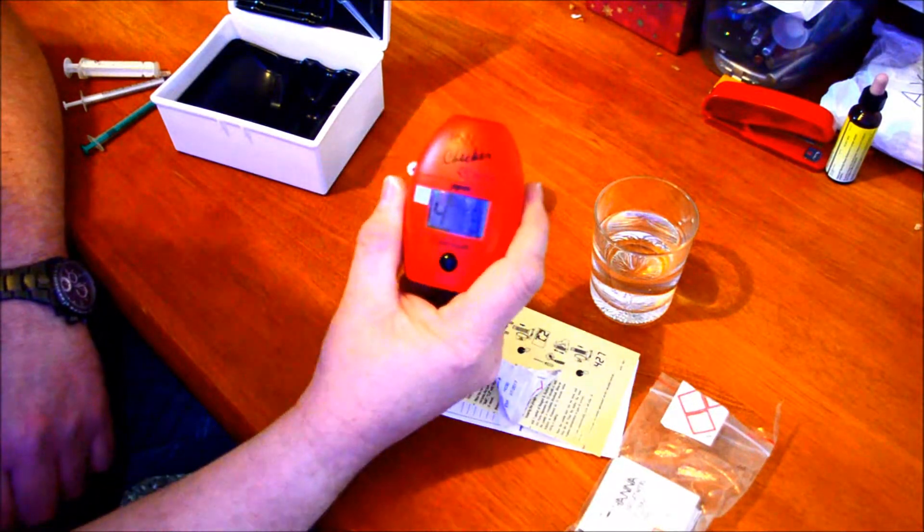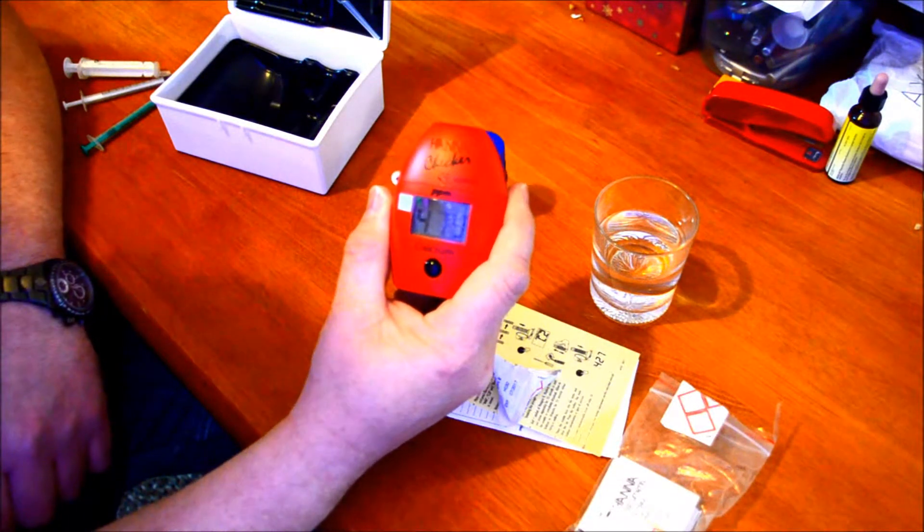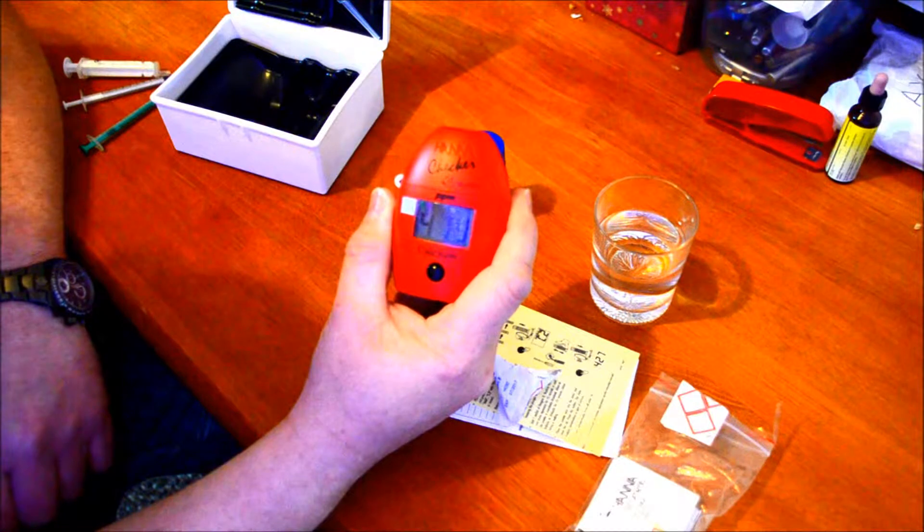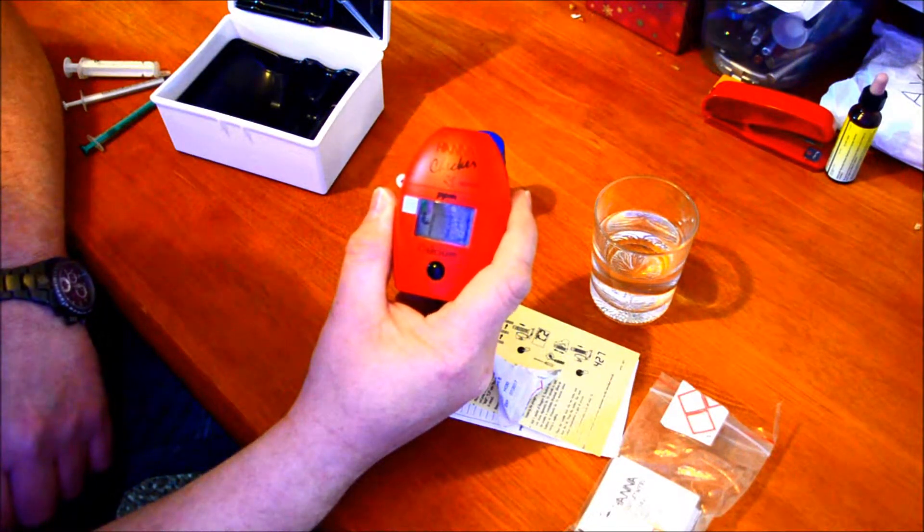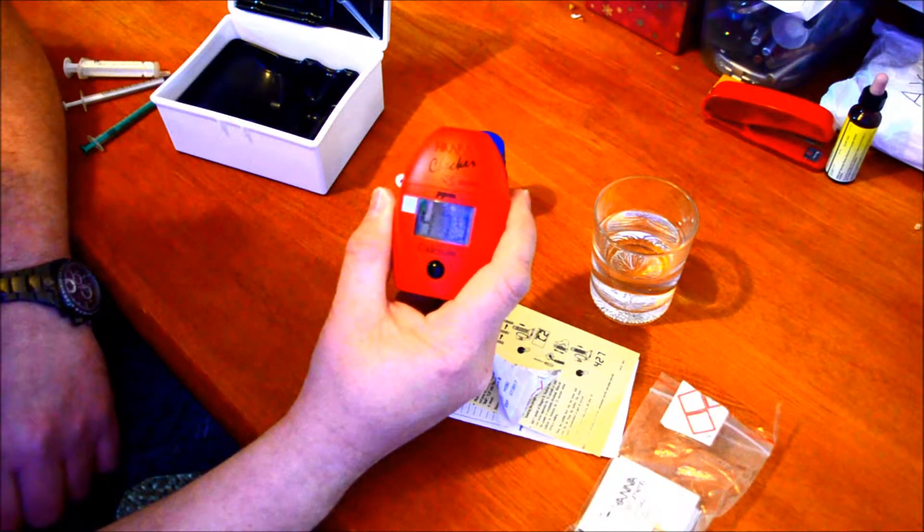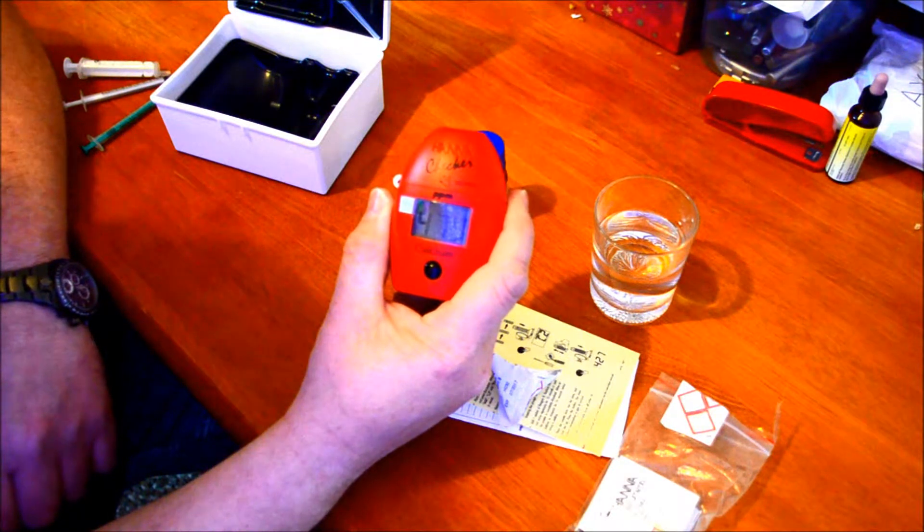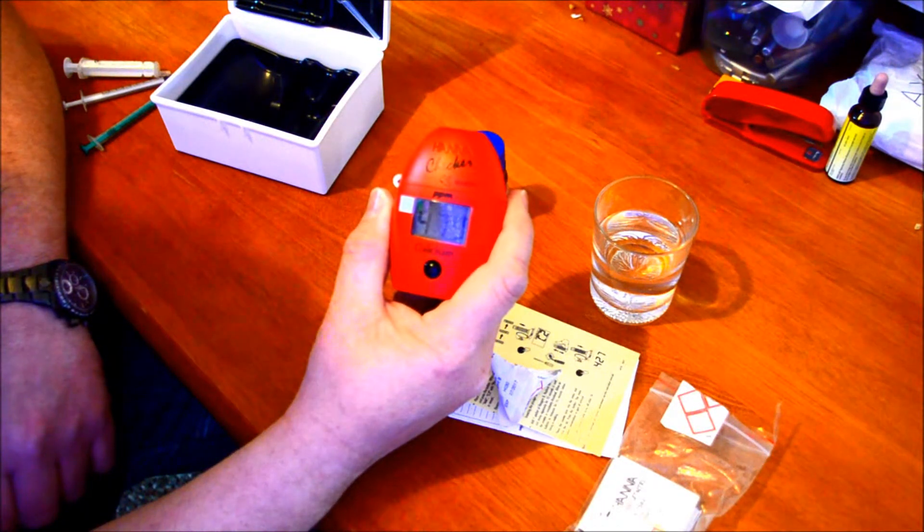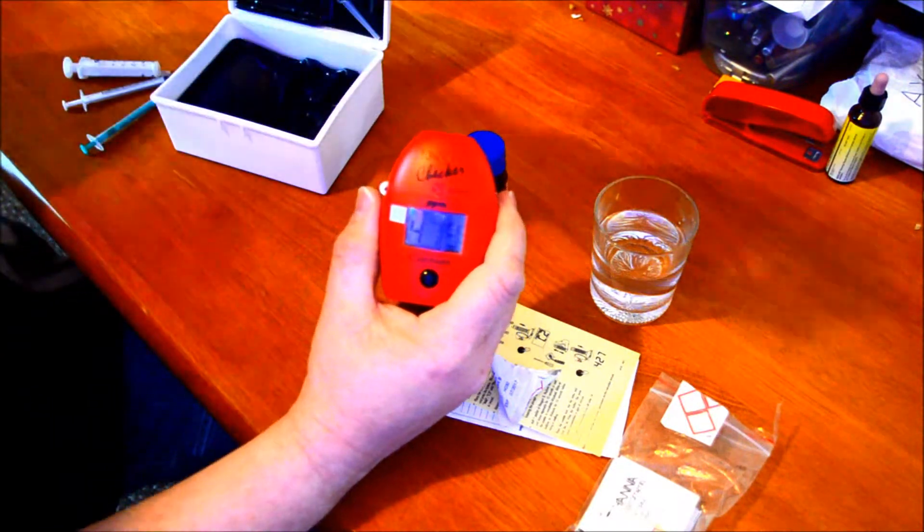As you can see, I've got a calcium reading of 479, which I'm quite happy with. So obviously my dosing and everything else seems to be keeping the calcium at a decent level. I also have a Hannah checker alkalinity one, which I will do a video on after this one. So that's it for now, laters.